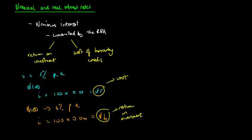As for monetary policy, the way the RBA conducts monetary policy is to manipulate nominal interest rates by altering the supply of money in the economy.